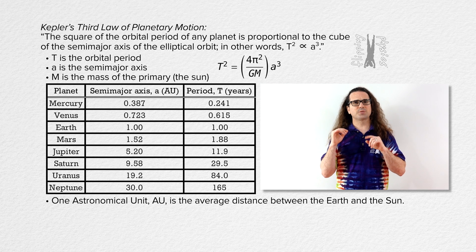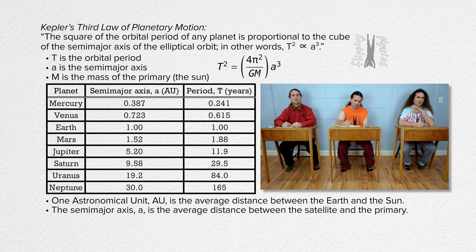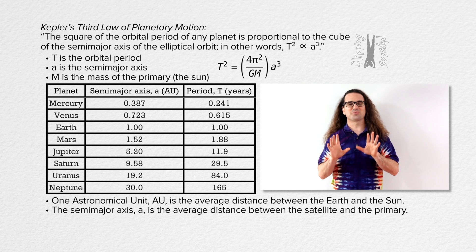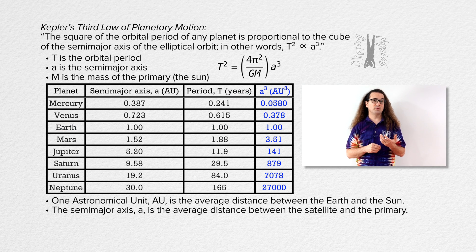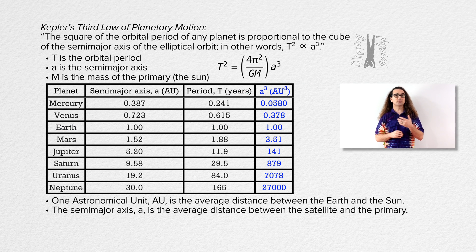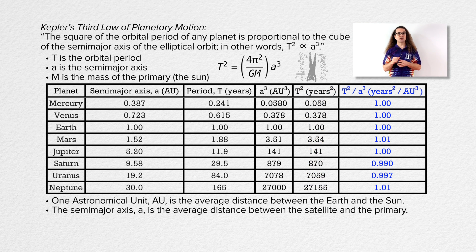Hold up — the semi-major axis is the average distance between the satellite and the primary? Yeah, sorry, have I not mentioned that before? No, you have not mentioned that the semi-major axis is the average distance between a satellite and the primary. That's cool. And now back to the table. The orbital periods are in Earth years, a logical unit of time in our solar system. And we can cube the semi-major axis, square the orbital period, and add a column for orbital period squared over semi-major axis cubed.